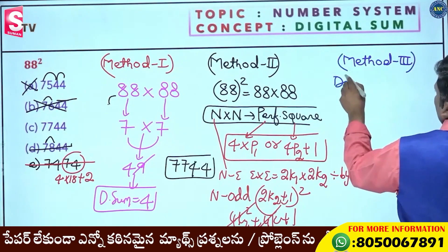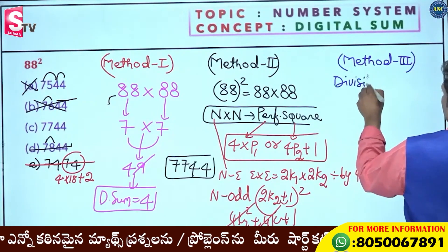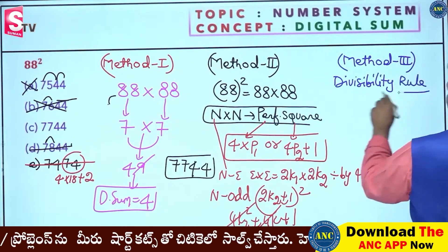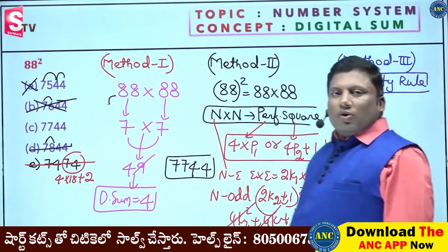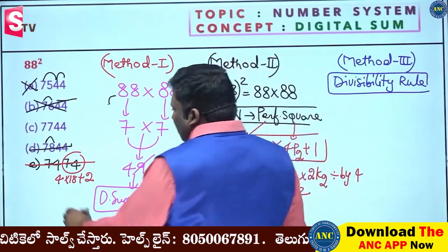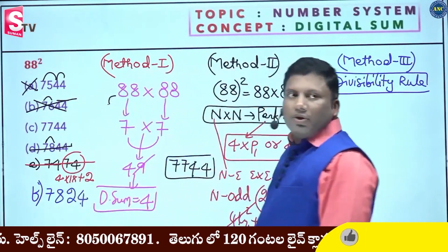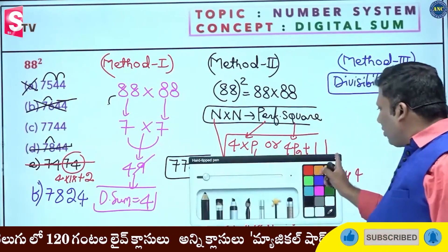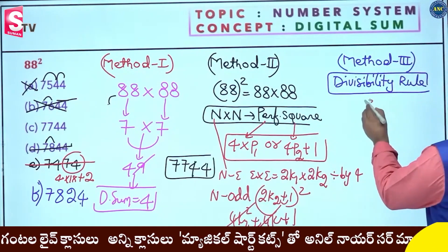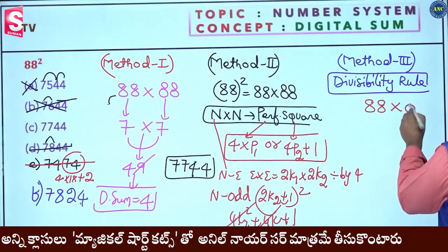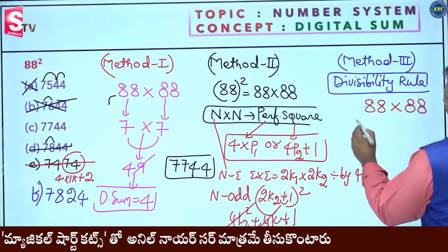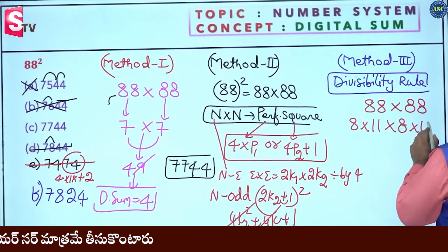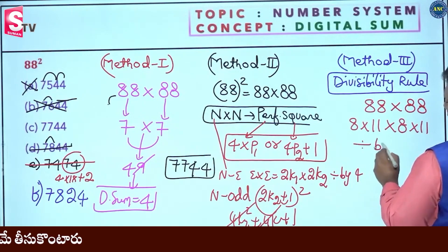Divisibility Rule Approach. Suppose option 7824. 88 is 8 into 11. So the answer should be divisible by 11. The question should be divisible by 11 - 88 is 8 into 11, so 88 squared is divisible by 11.